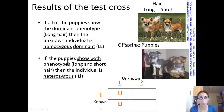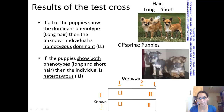But if the puppies show both phenotypes — some long-haired and some short-haired — then we know that this individual is heterozygous for hair length. It would have a dominant allele as well as a recessive allele, because it would produce short-haired puppies. By looking at the offspring, we can figure out what the unknown genotype is.